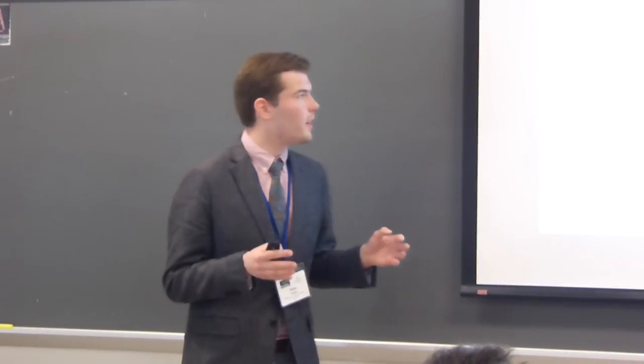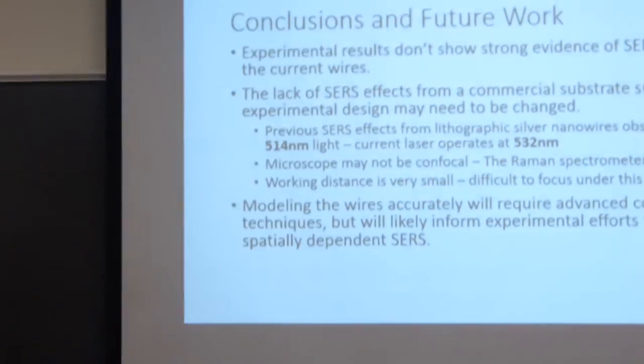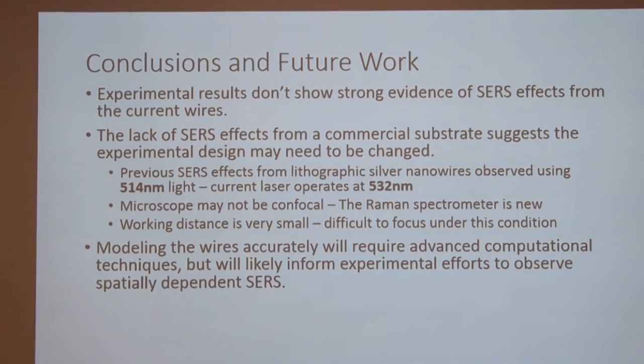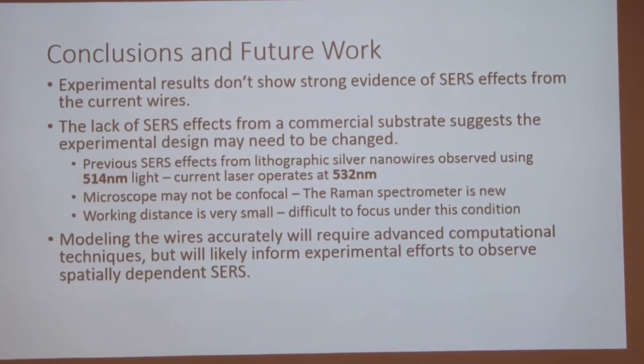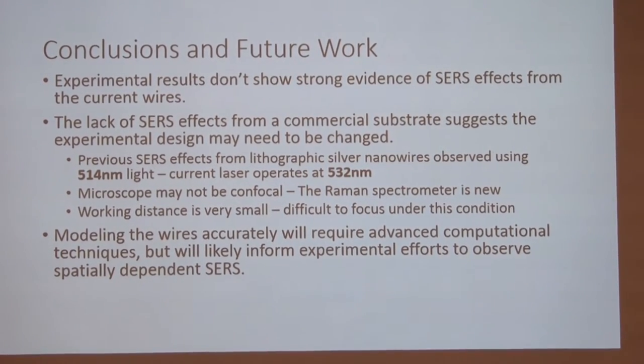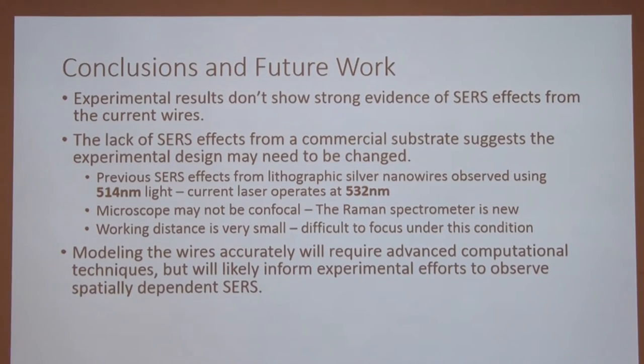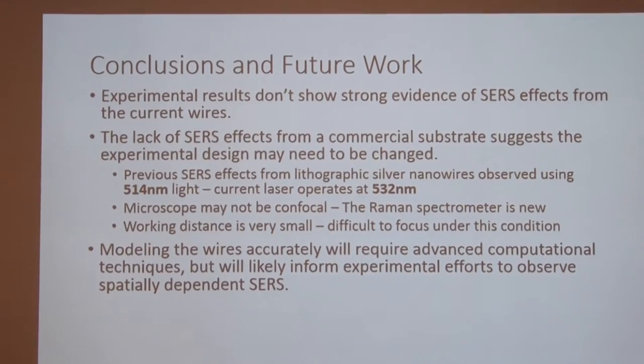So bringing this all together, our laboratory work has not shown very strong evidence of enhancement from silver nanowires. The reasons that we think this might be happening are previous efforts to get surface enhancement from lithographic nanowires, which is what we're using now, have succeeded with 514 nanometer light, and we're working at 532 nanometer light. So that's important because we have to hit that plasmon resonance frequency. And if we're creating wires where the plasmon resonance frequency works for that wavelength of light, it might not work very well for that wavelength of light. That's one possible problem.